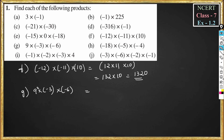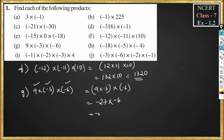Part g: 9 into minus 3 into minus 6. We'll do this in steps: first multiply 9 with minus 3, then multiply that answer with minus 6. So 9 into minus 3 is minus 27. Then minus 27 into minus 6: minus into minus is plus, and 27 into 6 gives 162. The answer is 162.